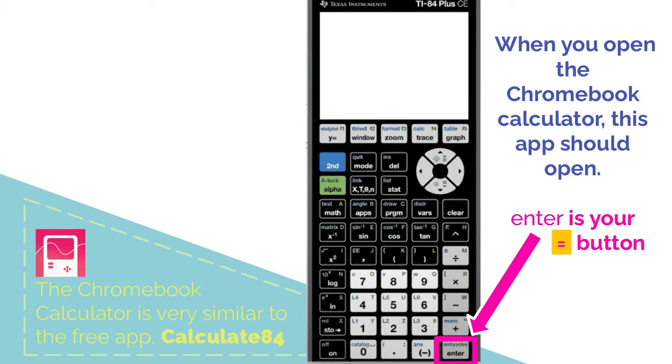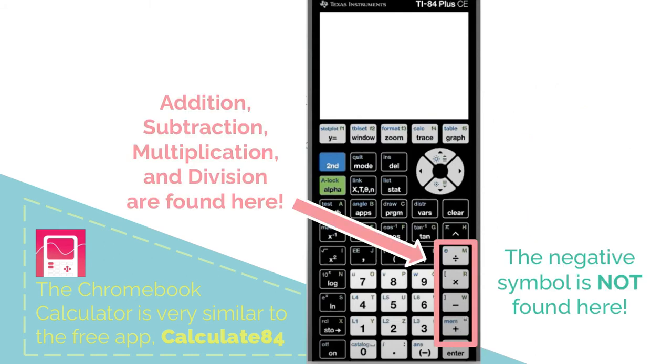The enter button in the bottom right corner is where you use your equal sign. Addition, subtraction, multiplication, and division are found on the gray buttons.